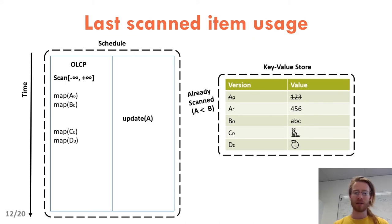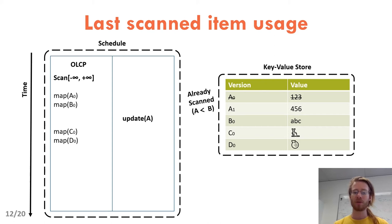Remembering the last scanned item is useful to avoid propagating an item that has already been scanned. In this example, A and B are scanned and then A is updated. A0 will not be propagated because it is lower in lexicographical order than the last scanned item. So basically, the timestamp of the snapshot and the last scanned item are sufficient to read items only once. In the paper, we have a more complete proof of correctness if you are interested.